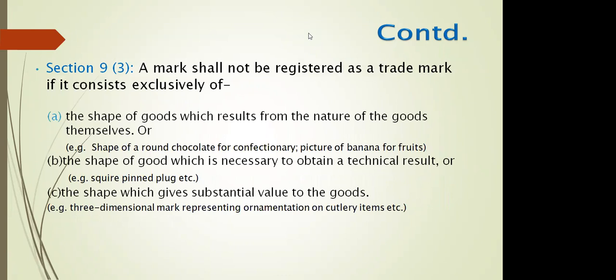Continuing on absolute grounds of refusal: the shape of goods resulting from the nature of the goods themselves cannot be registered — for example, the shape of a round chocolate for confectionery, or the shape of goods necessary to obtain a technical result such as a square pin plug. A shape that gives substantial value to the goods — for example, a 3D mark representing ornamentation on cutlery items — cannot be registered as a trademark. However, the nature of goods and services to which a trademark refers shall not be used as a ground for refusal of registration.